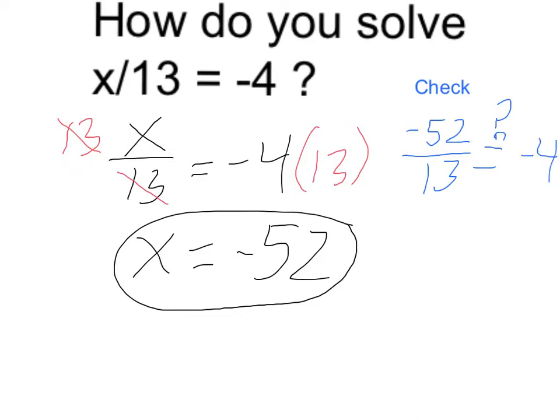So I would do 13 into 52, which does go 4 times, and because this is negative, the whole thing would be negative. So this is equal to negative 4, and it does check out.